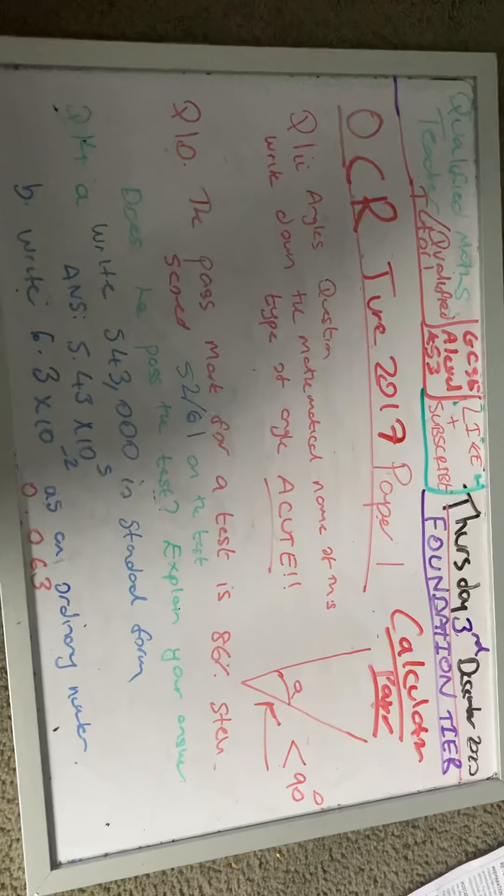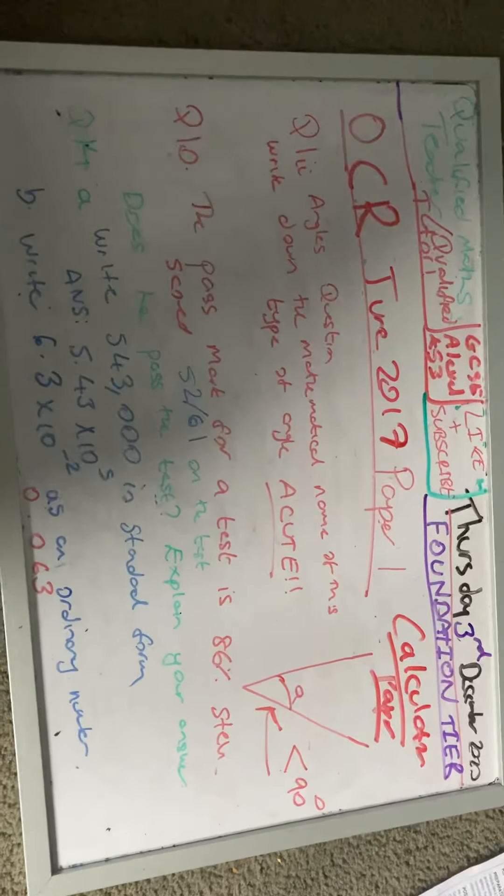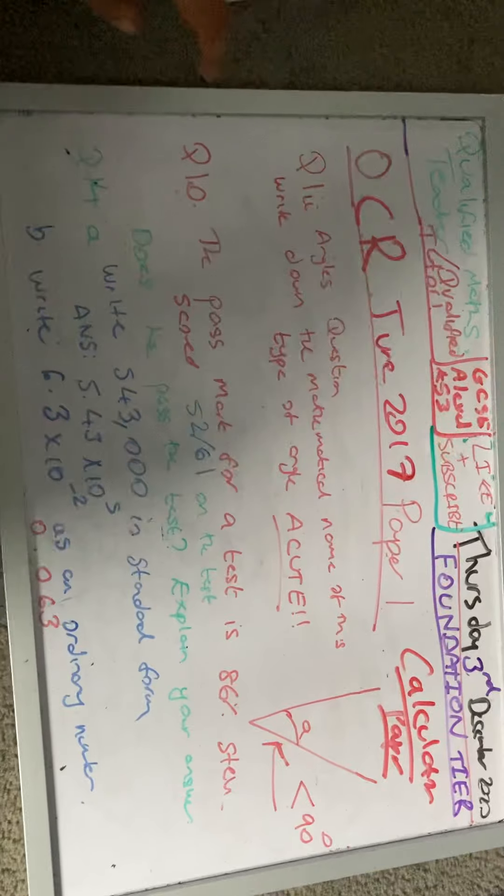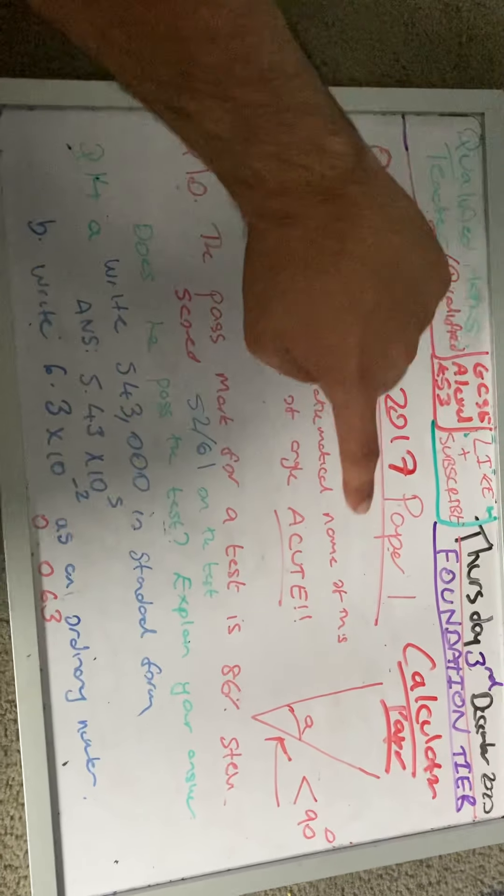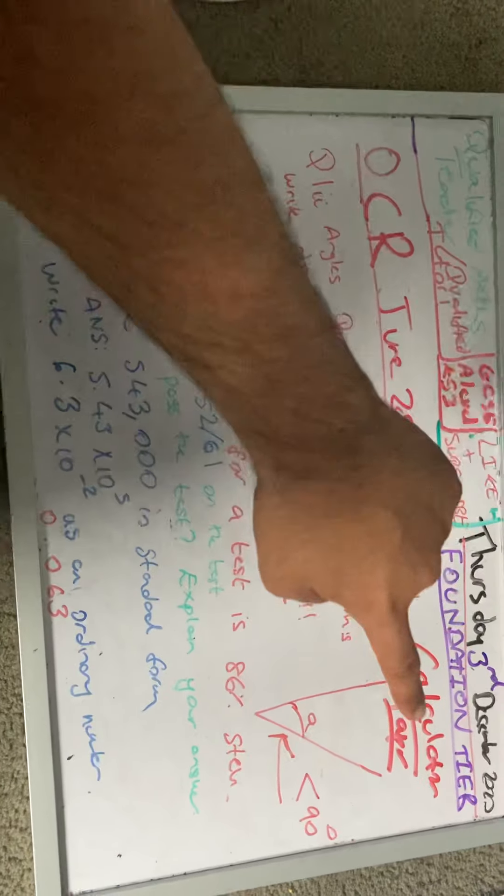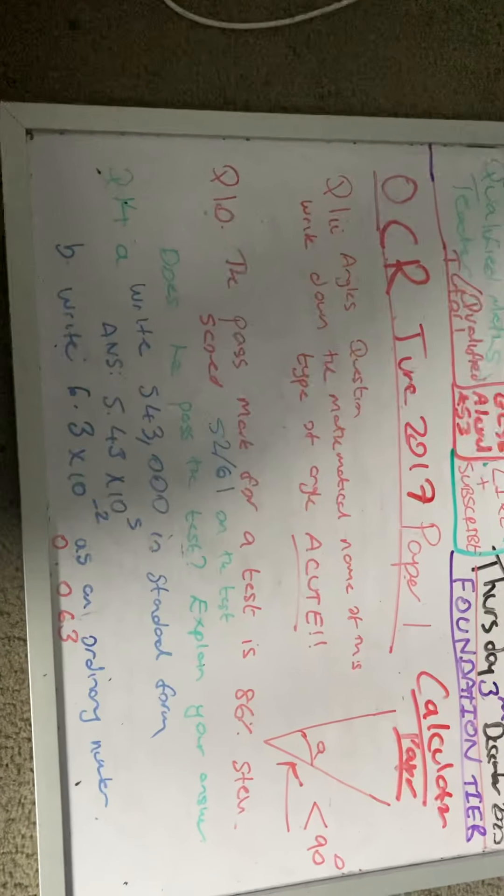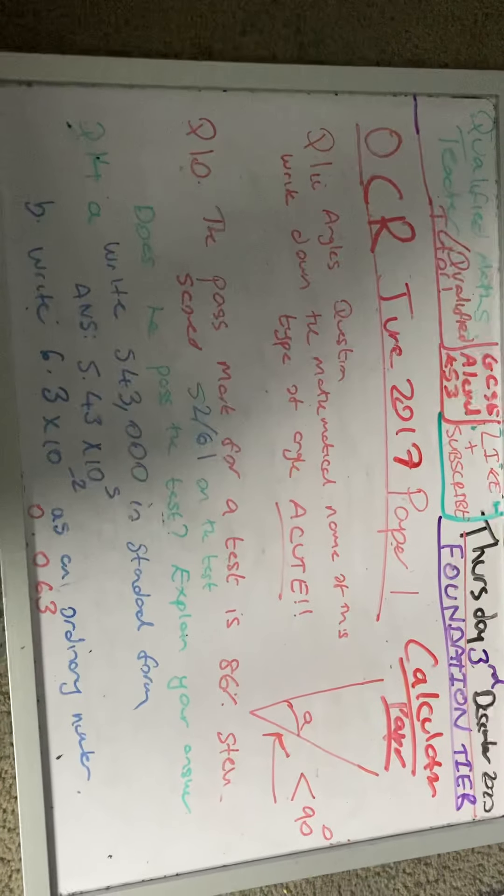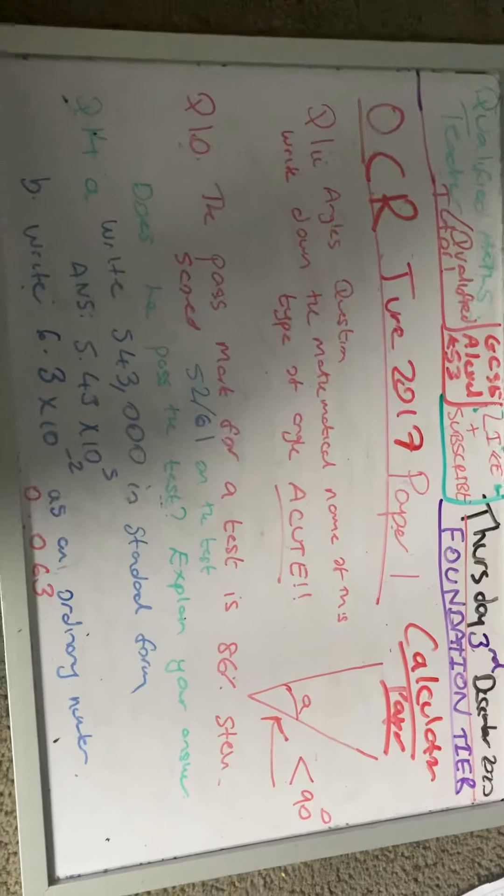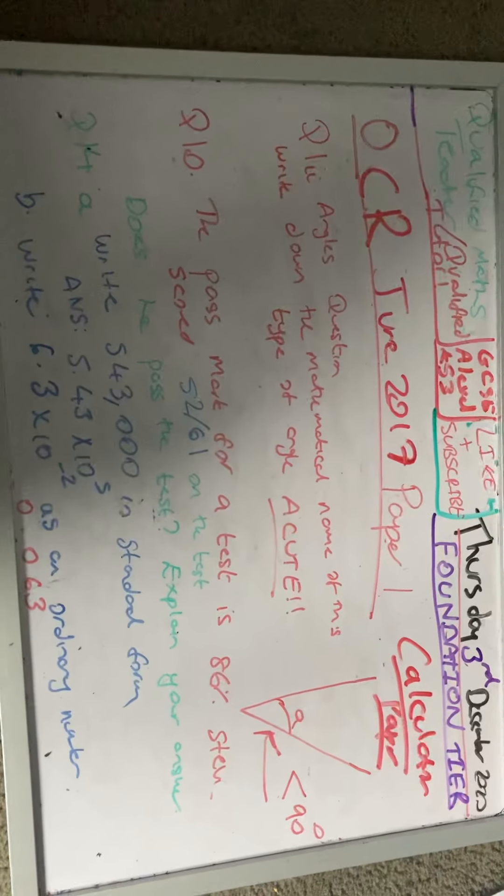Getting into today's video, question 1II. So 1II is an angles question. Write down the mathematical name of this type of angle. You are given this angle here. That angle is called acute. Acute means that it's less than 90 degrees, so that is a small angle.